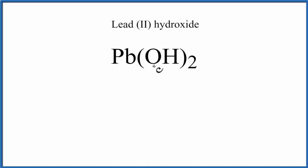Pb, lead, that's a metal, and then O and H, those are nonmetals. They're bound together tightly in what we call polyatomic ions, called the hydroxide ion.